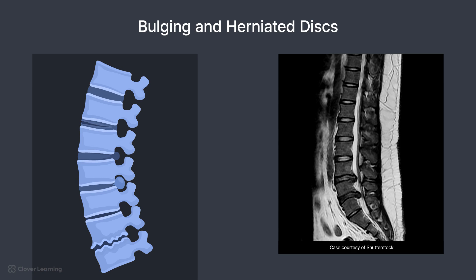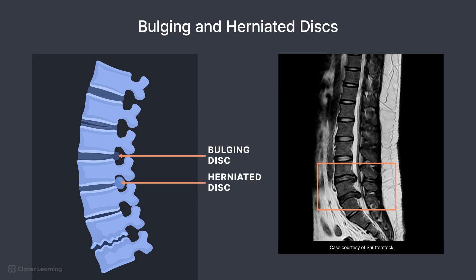First, let's address some pathologies of the intervertebral discs. Due to MRI's superior ability to demonstrate soft tissue structures, pathologies associated with discs are common indications for an MRI scan. Patients may have a bulging disc, in which there is a weakened area in the annulus fibrosis causing a portion of the disc to protrude. A herniated disc is when the annulus fibrosis has ruptured and the nucleus pulposus is squeezed outside of the disc.